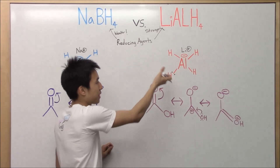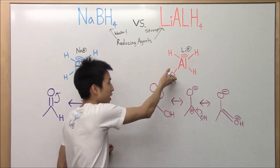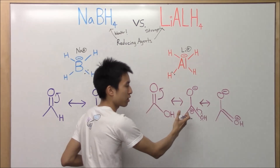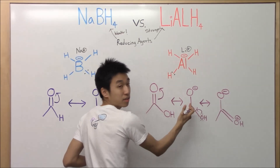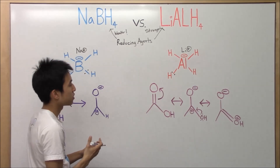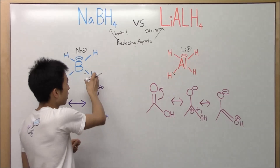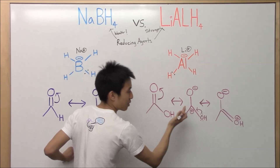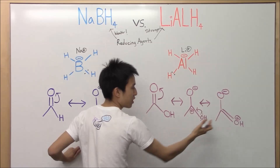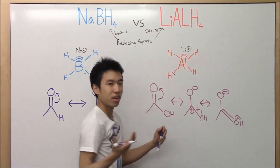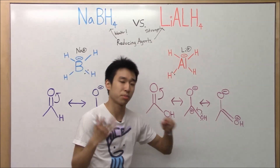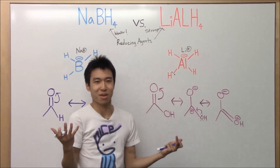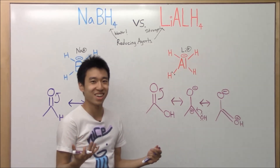So if sodium borohydride is already less reactive due to its stronger bond, and its target molecule is also less reactive, then two not very reactive compounds won't react with each other. But lithium aluminum hydride is already pretty strong, so its hydride can find the carbon and attack in. When the hydrogen comes, it sees positive charges in multiple places and just attacks through — it's a strong enough reagent to push through.